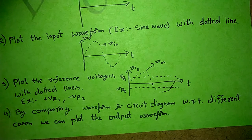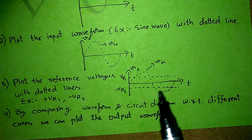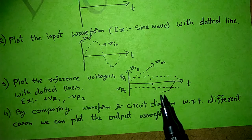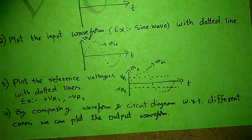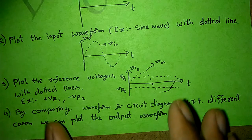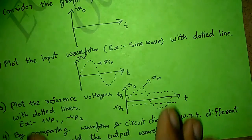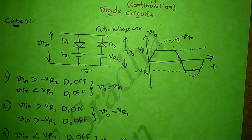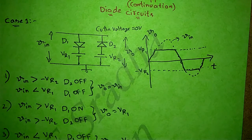The final step is by comparing the waveform and the circuit diagram, we can analyze the output and plot thick lines on this frame to get the output waveform. We followed the same steps for plotting the output waveform in the first case.